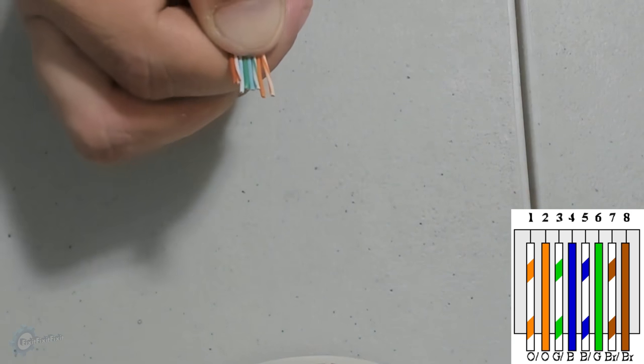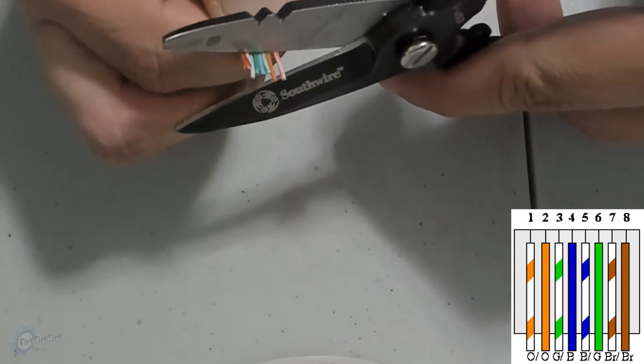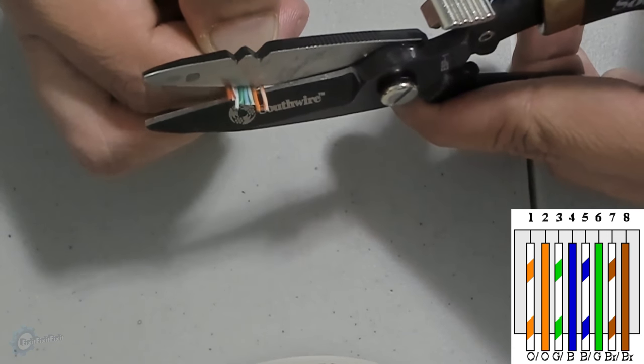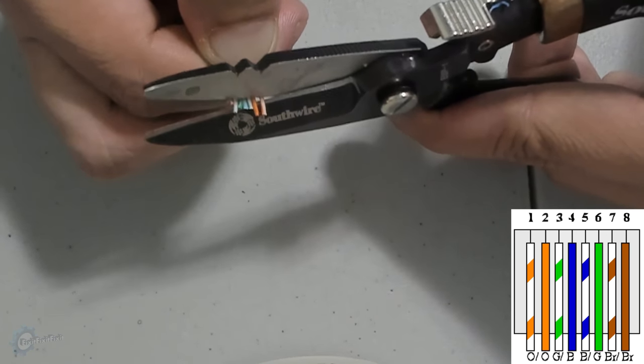Once you wrangle the wires into the correct order, check the length of the exposed wire. Are any of them a bit longer than the others? If so, you must trim all the wires straight.